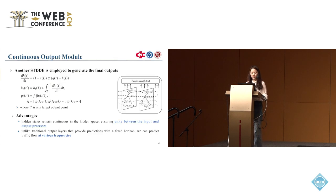Then we introduce our continuous output model. We apply another STDDE to generate the final outputs, which has two advantages. The first advantage is that hidden states remain continuous in the hidden space, ensuring unity between input and output processes. The second advantage is, unlike traditional output layers that provide predictions with a fixed horizon, in this paper we can predict traffic flow at various frequencies.